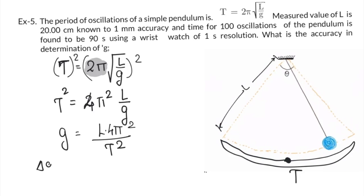So for delta G upon G, I will be getting delta L by L plus 2 times delta T by T. But here, if you note down the question properly—